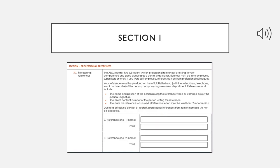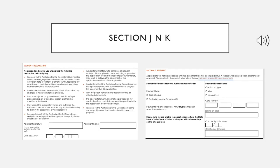Section I requires two professional references from two different dentists who are not related to you. You can get these letters from either your senior or a co-dentist. The details of the two dentists — their name and email address — should be mentioned so ADC can contact them. The format of the letter of recommendation has been given in the checklist. Most importantly, the validity of the letter of recommendation is only 12 months, so the date is very important.